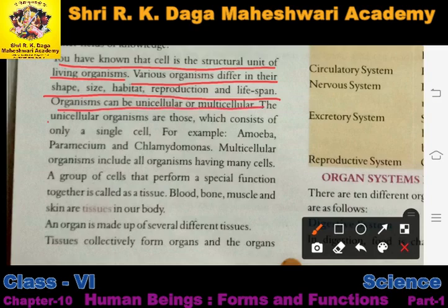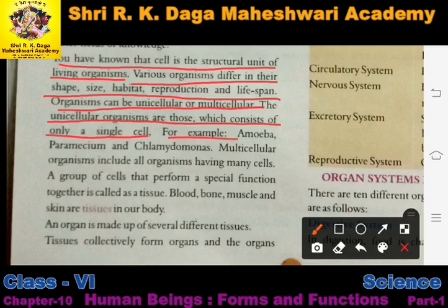Organisms can be unicellular or multicellular. Unicellular organisms are those which consist of only a single cell. These are examples of unicellular organisms.